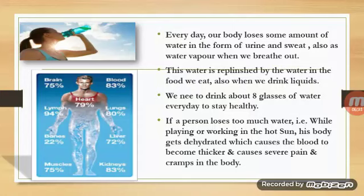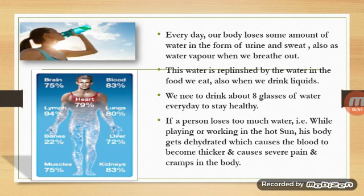If a person loses too much water while playing or working in the hot sun, the body gets dehydrated, which causes the blood to become thicker and causes severe pain and cramps. A dehydrated person may get sunstroke or collapse. Doctors give electrolytes or juices to fulfill the required amount of water in the body.